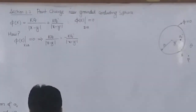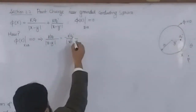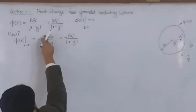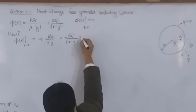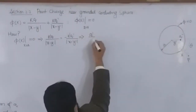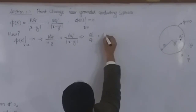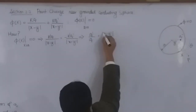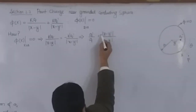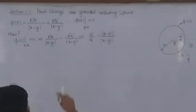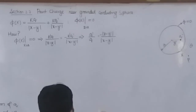Canceling K on both sides and rearranging, Q prime over Q equals |x − y prime| over |x − y|, with a minus sign. I can write that Q prime divided by Q equals minus |x − y prime| divided by |x − y|. Now if I square both sides...